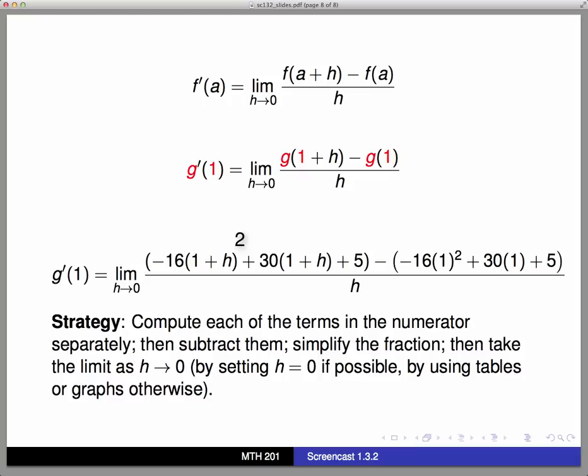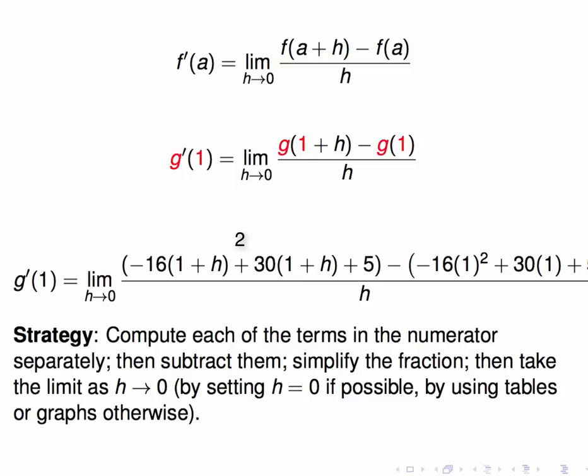Once the entire fraction is simplified, I'm going to take the limit as h goes to 0. If all works out well, I should be able to take this limit by just setting h = 0. That may not be possible. If I can't set h = 0, I want to still think if the limit exists by using tables or graphs. So let's go to a different space and actually calculate this derivative g'(1).